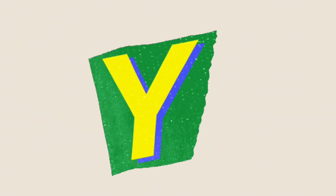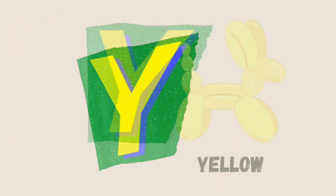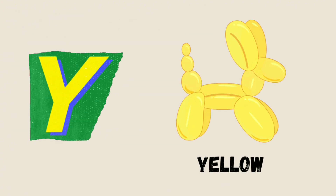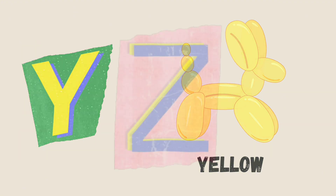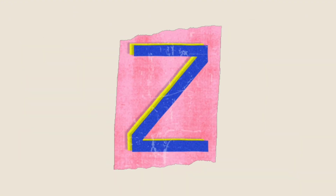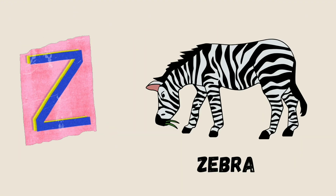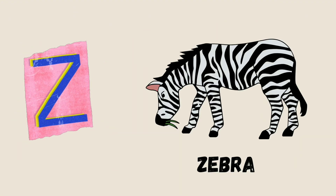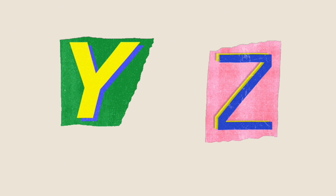Y is for Yellow, Y-Y-Yellow. Z is for Zebra, Z-Z-Zebra.